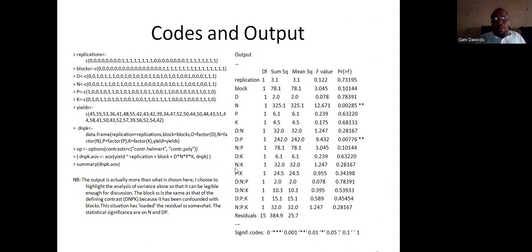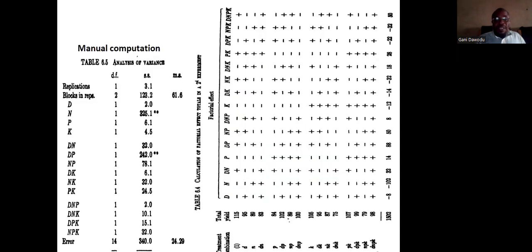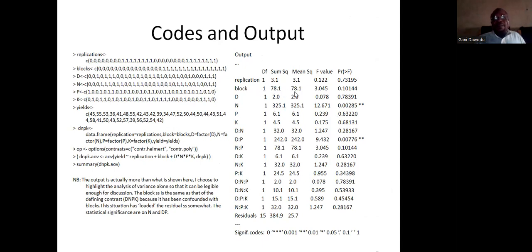So R is here telling you that DNPK is confounded with blocks. Further on that, you will notice that DNPK is not listed. Just like even in the ANOVA calculation, DNPK is not listed. But this is giving you the blocks effect directly, while this is implementing the fact that DNPK is confounded with blocks. Like I told you, the sum of squares for error will be partially loaded because the excess from here will come to the residual. And again, the degrees of freedom for residual has now become 15. Otherwise, any other thing is the same.